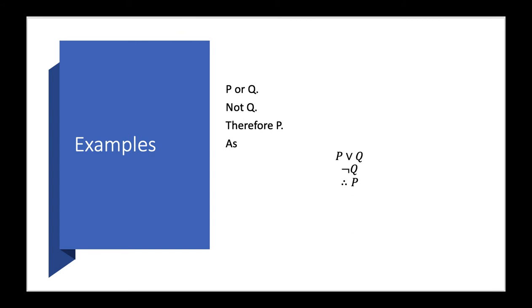Now we can write our statement, P or Q, not Q, therefore P, as basically P or Q, not Q, therefore P.